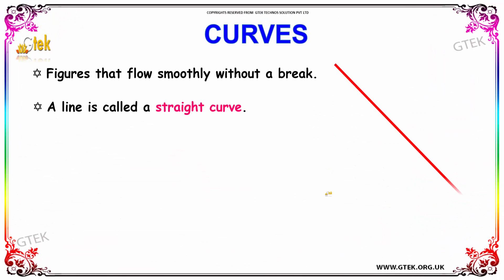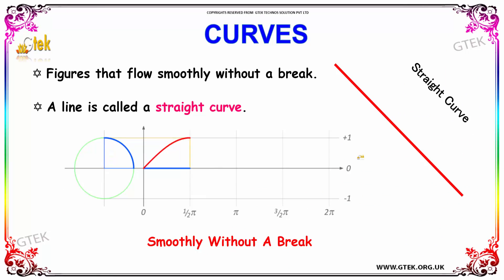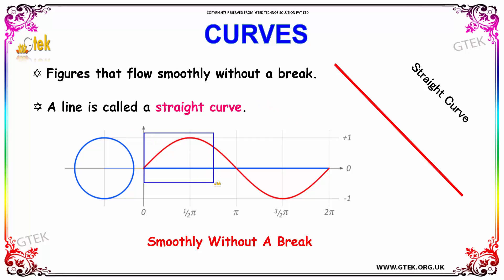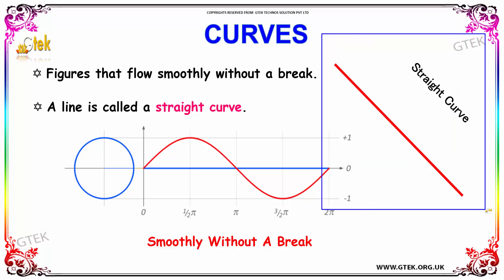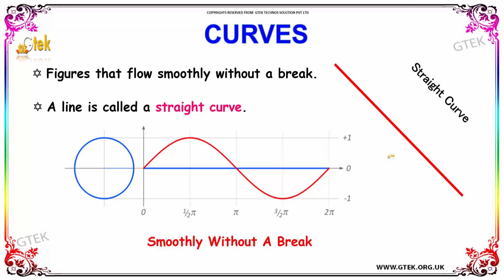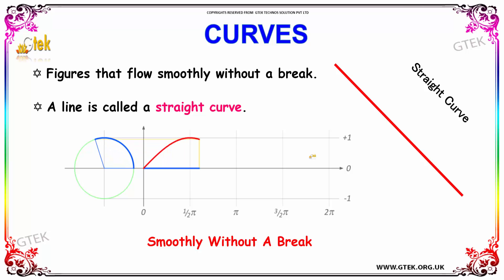Moving on, next we have curves. Figures that flow smoothly without a break are said to be a curve. As you can see, there is no break and hence it is a curve. A line is a straight curve — it doesn't have a deviation nor a break, and this line is continuous, hence it is a curve.